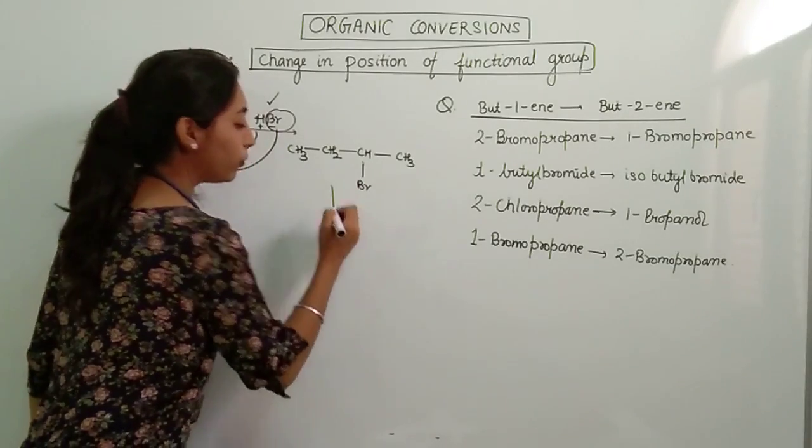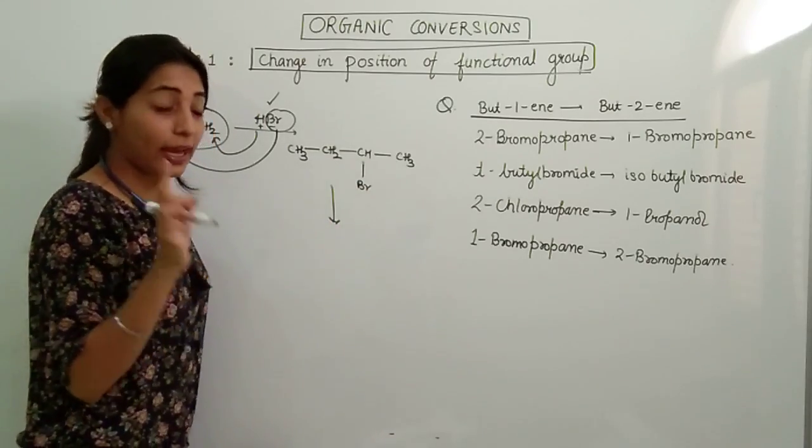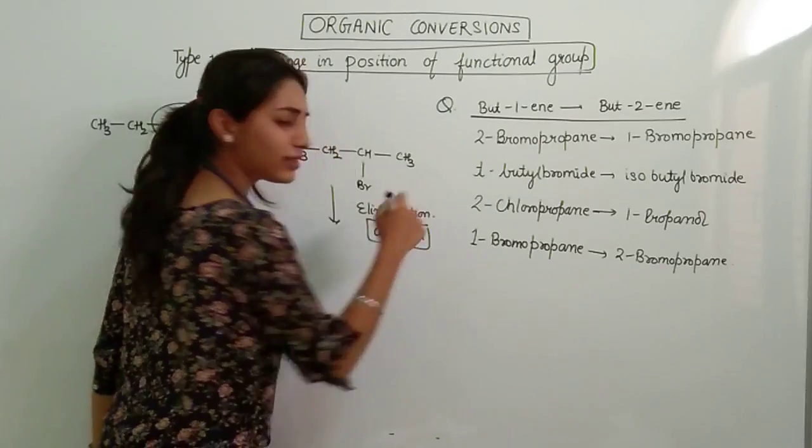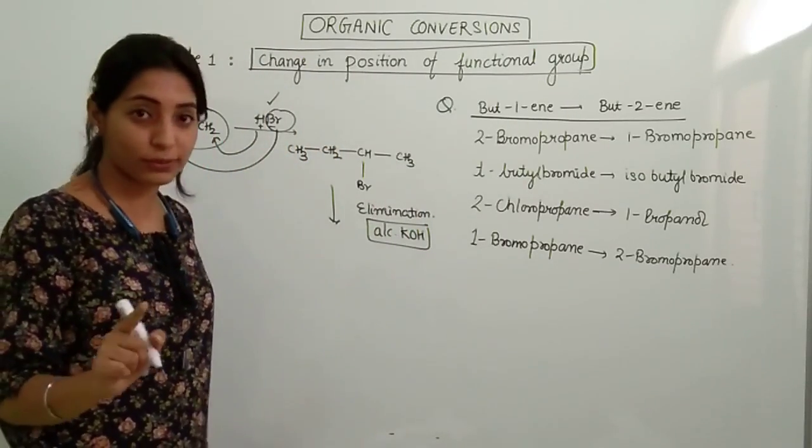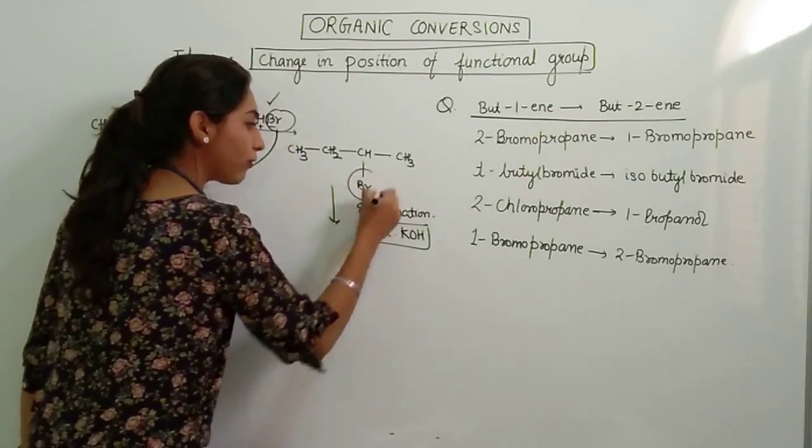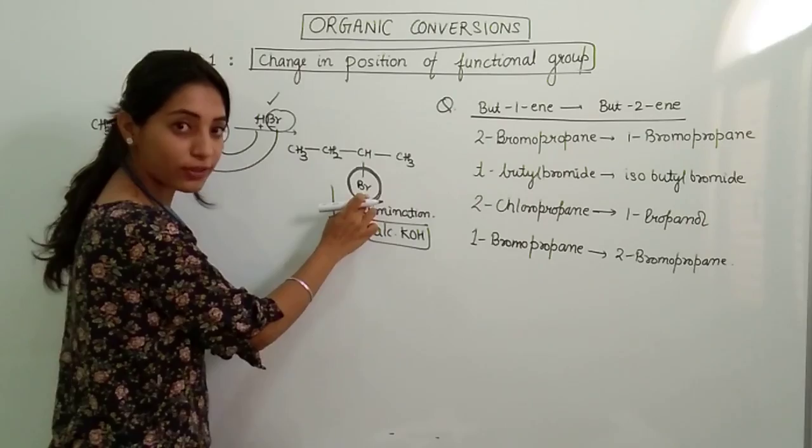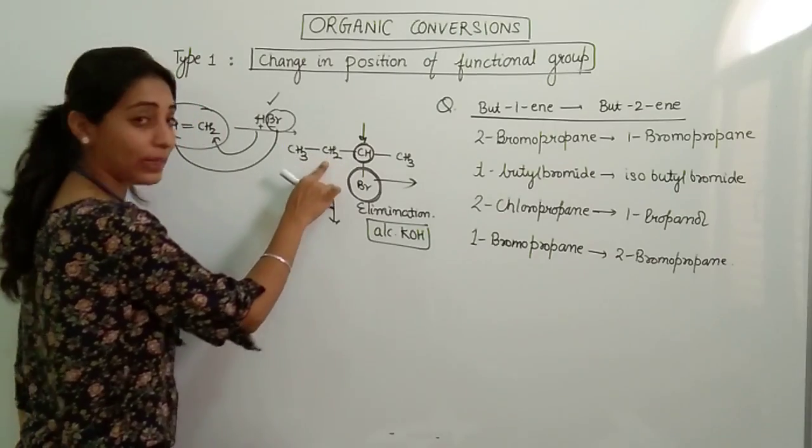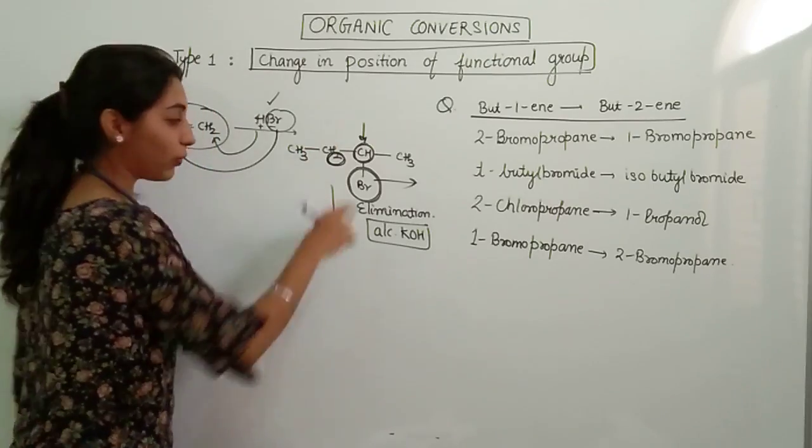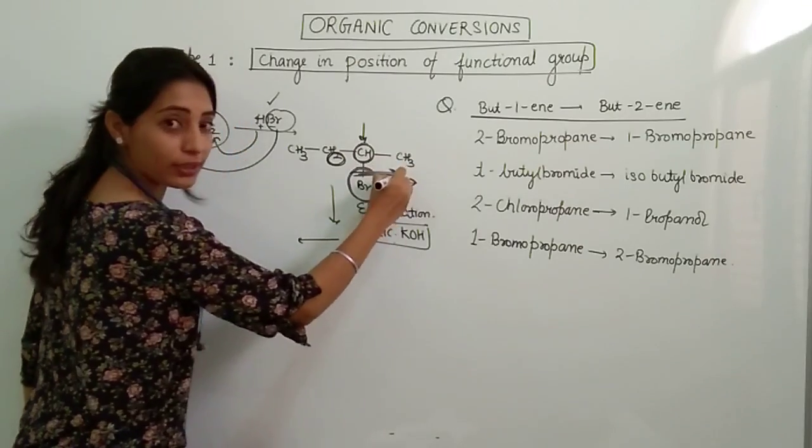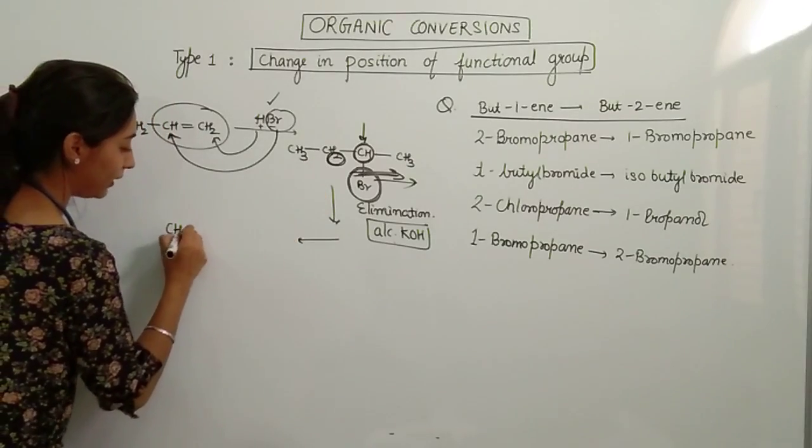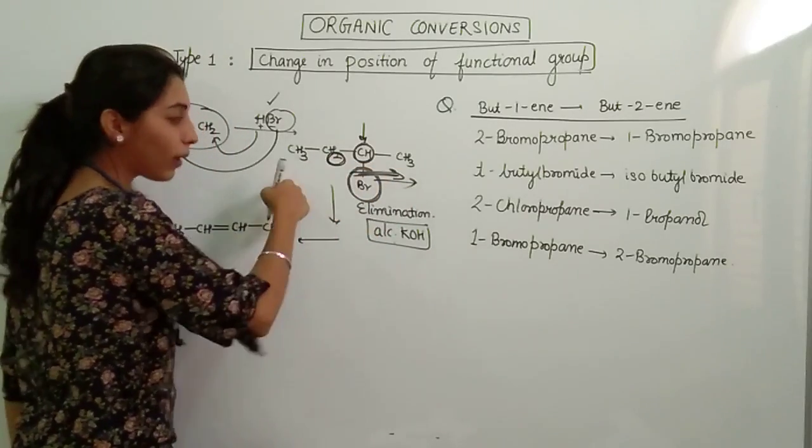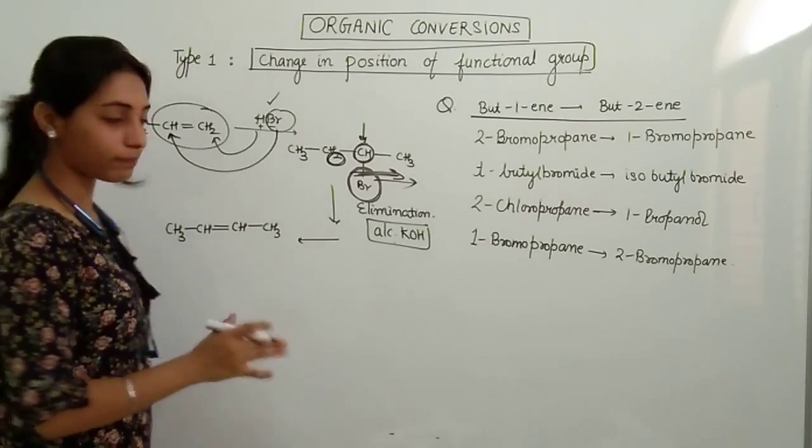Now the second step: you do the opposite thing again. Opposite here means you do the elimination. And you have to remember for elimination reactions, you have to use alcoholic KOH. For elimination you have to mark the carbon with the functional group. From this carbon you have to take out Br, and from the neighboring carbon you have to take out one H. When you do this, Br will be going from this carbon and H will be going from the neighboring carbon. So final product will be CH3-CH=CH-CH3.